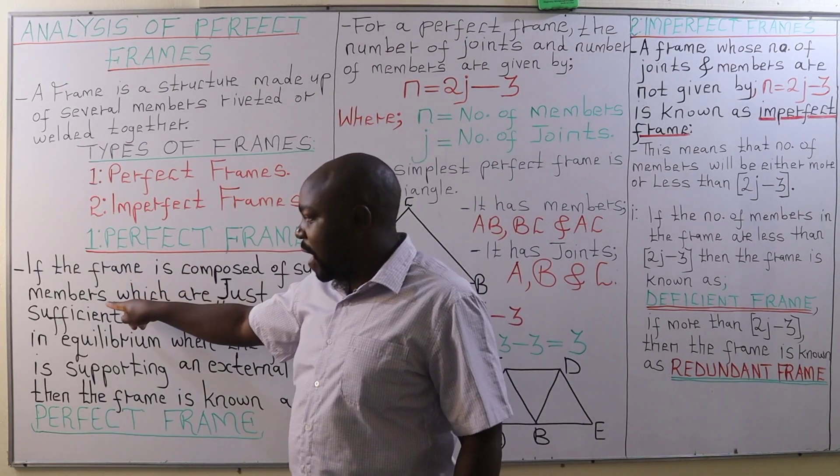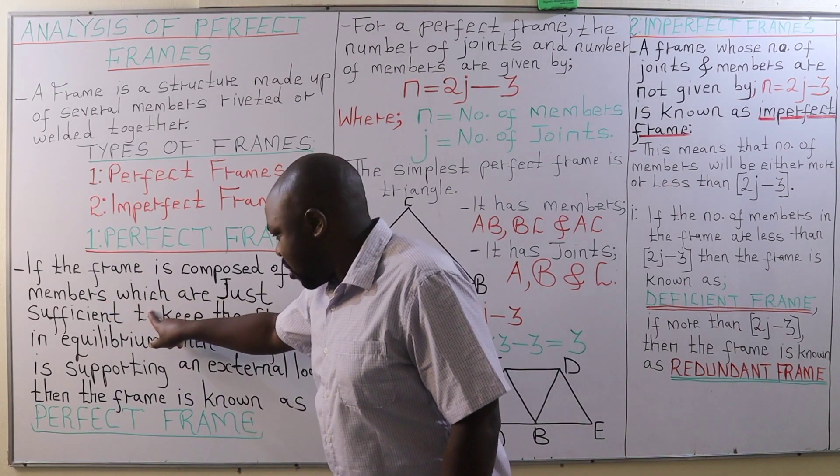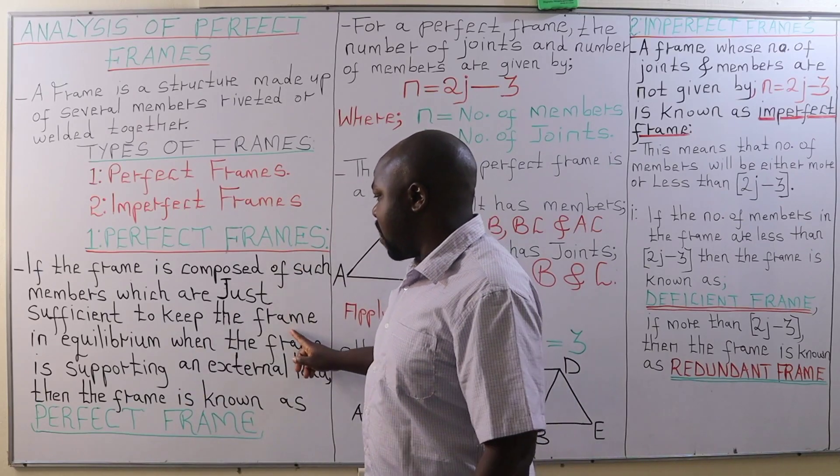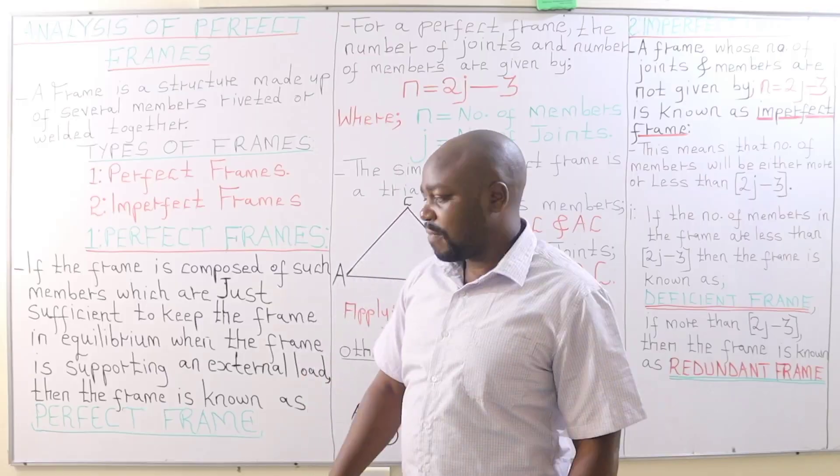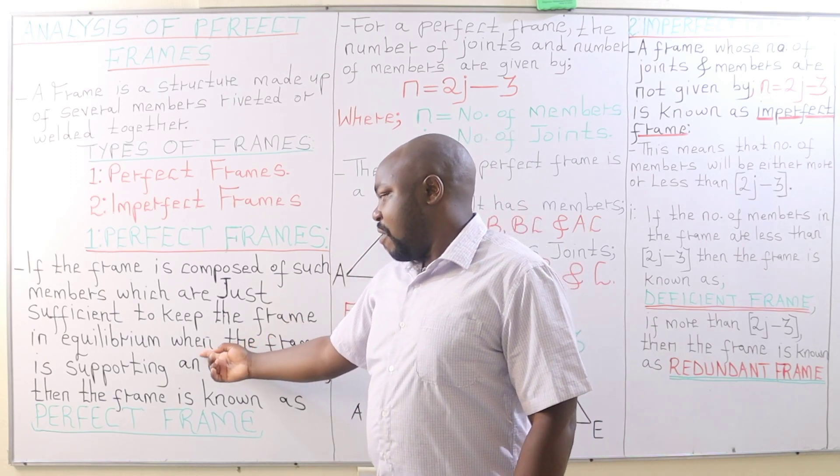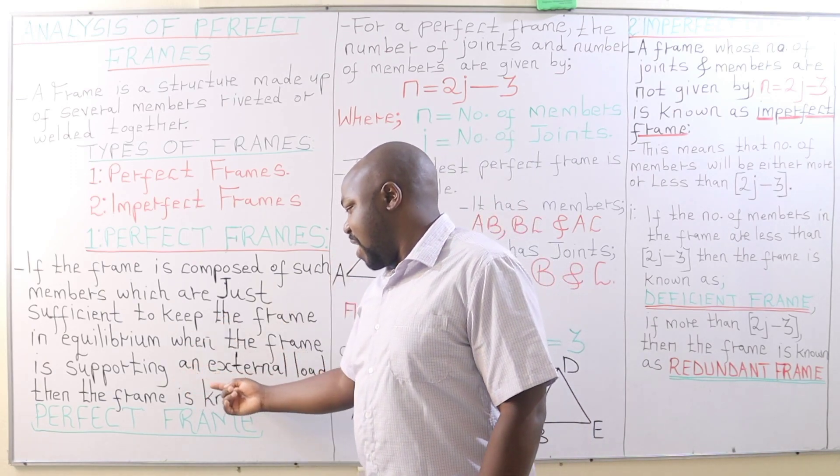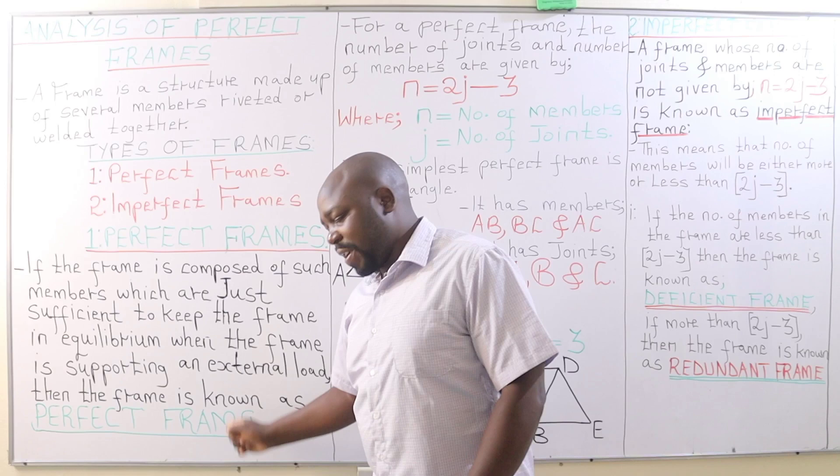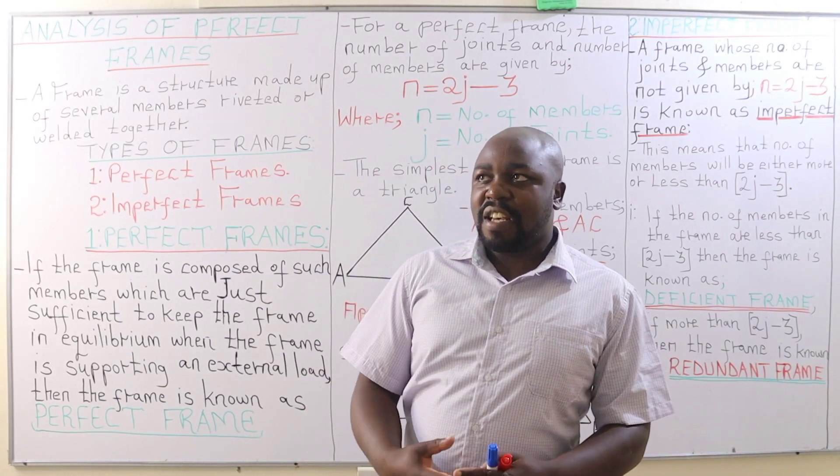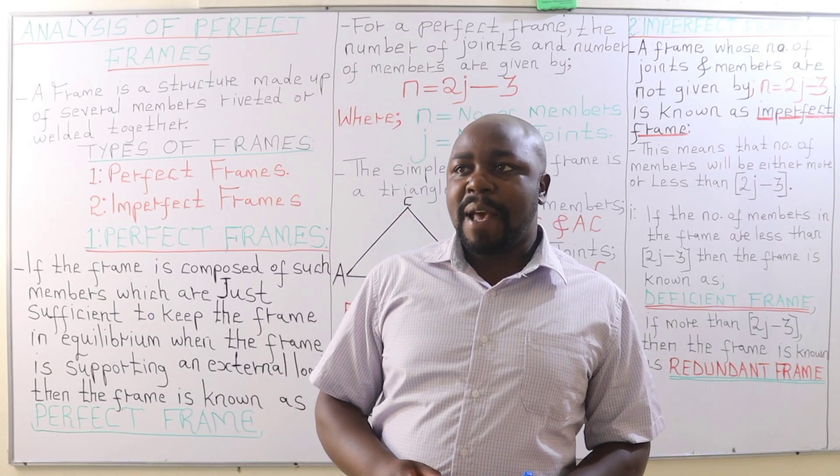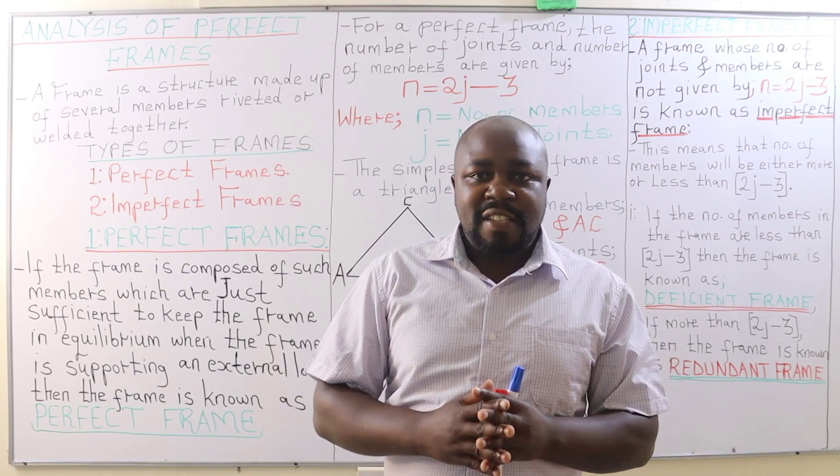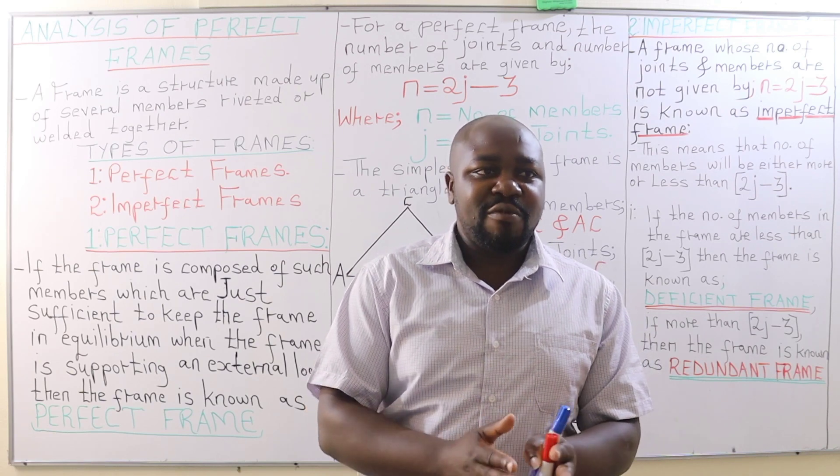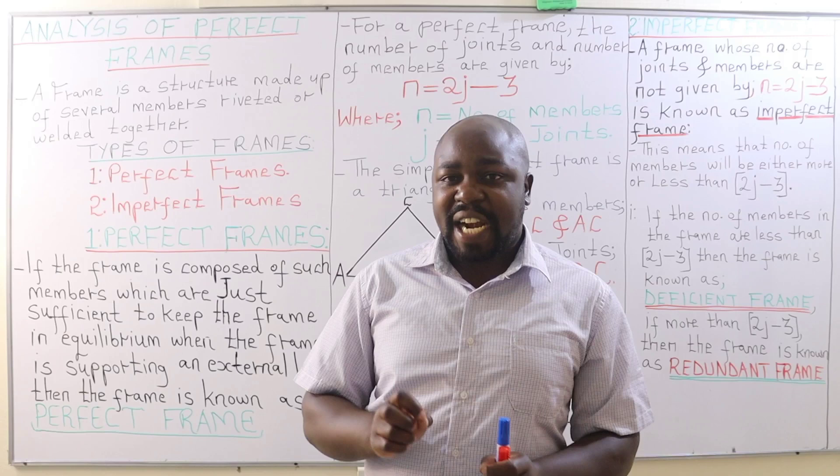Now, when do we refer to a frame as a perfect frame? If the frame is composed of such members which are just sufficient enough to keep the frame in equilibrium when the frame is supporting an external load, then that frame is known as a perfect frame.